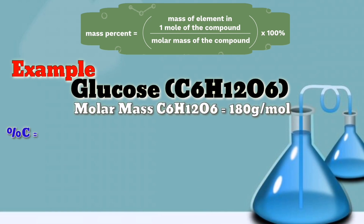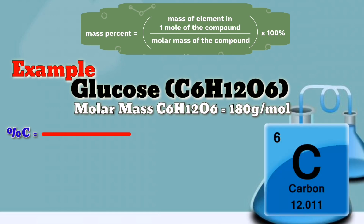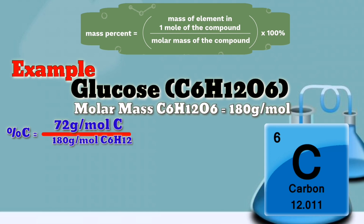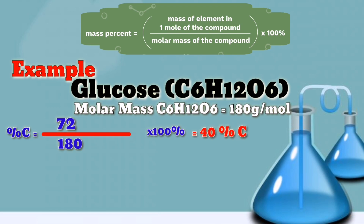Let's start with the percentage of carbon. The atomic weight of carbon is 12. Since we have 6 atoms of carbon, that's multiplied by 6, giving us 72 grams per mole of carbon. Divided by the molar mass, which is 180 grams per mole, times 100 percent. So 72 divided by 180 times 100 equals 40 percent carbon.